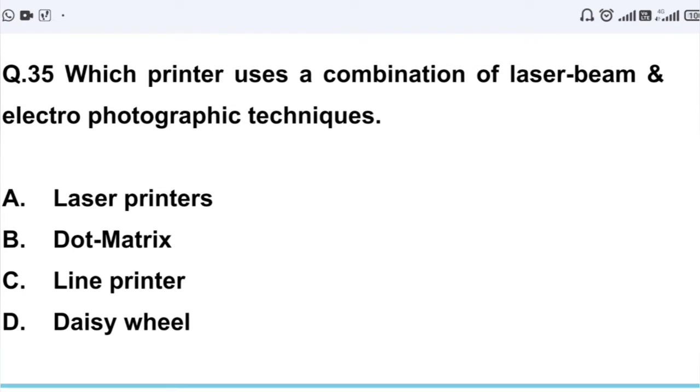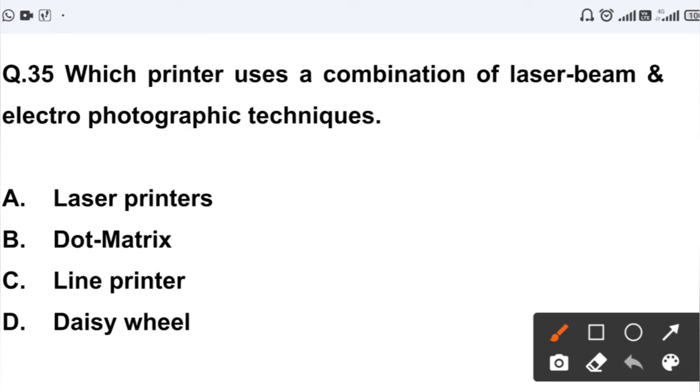Question number 35: Which printer uses a combination of laser beam and electro photographic techniques? Option A: laser printer. Option B: dot matrix. Option C: line printer. Option D: daisy wheel. So this printer which has a combination of laser beam and electro photographic techniques, we call it laser printer. Option A is the correct answer.